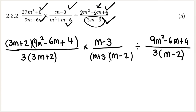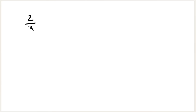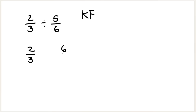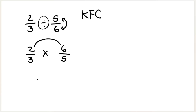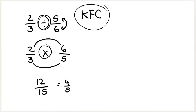If you are dealing with division, you need to apply the KFC method — also called tip and times. For example, 2 over 3 divided by 5 over 6: you keep the first fraction the same, flip the second fraction (so 5 over 6 becomes 6 over 5), and change the divide sign to a times sign. Then you can multiply: 2 times 6 is 12, and 3 times 5 is 15, simplified to 4 over 5. So KFC converts a division into a multiplication.